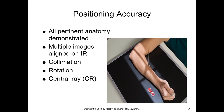Rotation: it's important to make sure that the body part is rotated correctly. For example, in this lateral forearm, the forearm is in the neutral position — not externally rotated or internally rotated. So the right amount of rotation is always important.